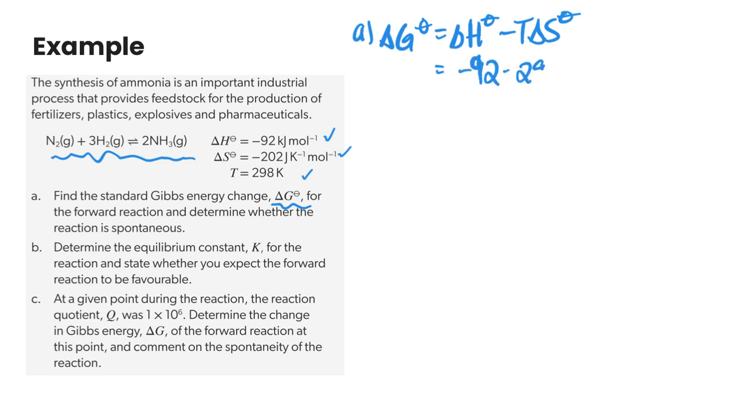So subbing in our values here, this one's going to be 0.202, and doing the math we get negative 31.804, or if we're rounding that off to sig digs we're going to have negative 32 kilojoules per mole.